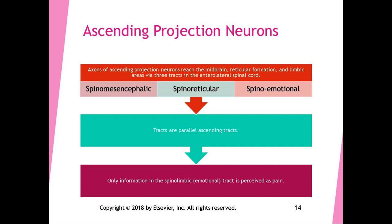These are parallel ascending tracks. Only information in the spinal emotional tract is perceived as pain; the spinal mesencephalic and spinal reticular tracts carry nociceptive information for other purposes. The spinal mesencephalic tract is involved in turning the head and eyes toward the source of pain and initiating some autonomic function in the midbrain. The spinal reticular tract relates to the reticular activating system — it modulates attention and arousal, including whether you can sleep.